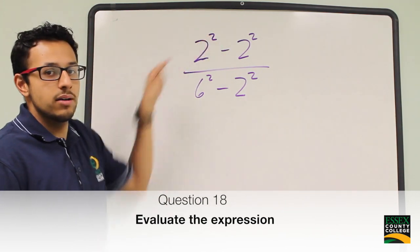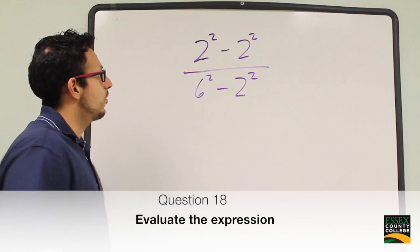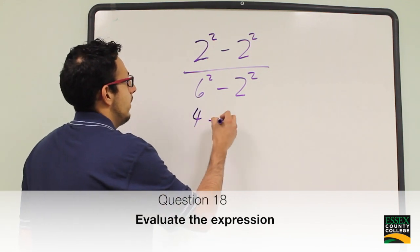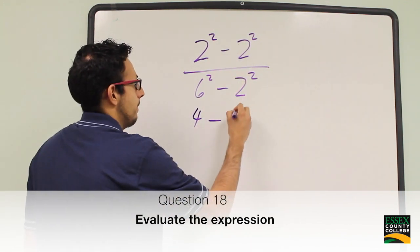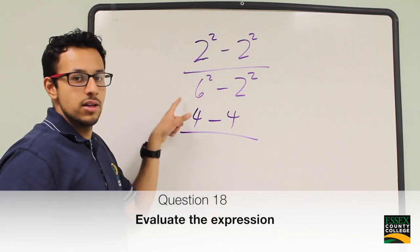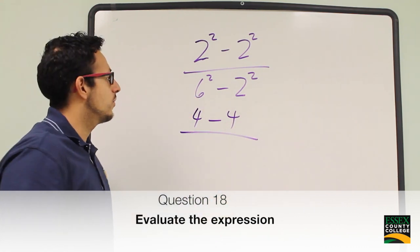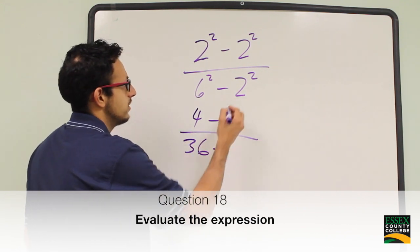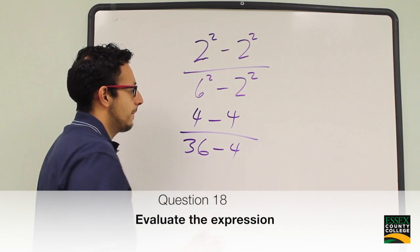2 squared is 2 times 2, which is 4, minus 2 squared again, which is 4, over 6 squared. 6 squared is 6 times 6, which is 36, minus 2 squared again — 2 times 2 is 4.